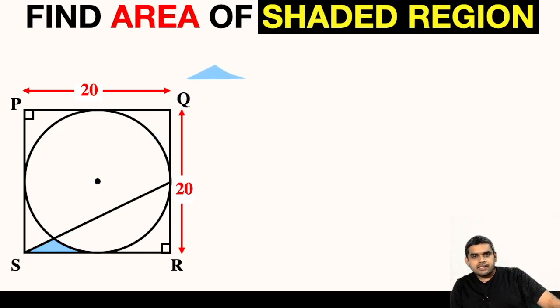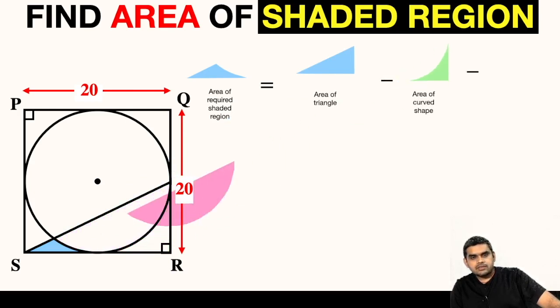We can write area of this required shaded region equal to area of this blue triangle minus area of this curved figure minus area of this segment. Let us first focus on finding area of this triangle.